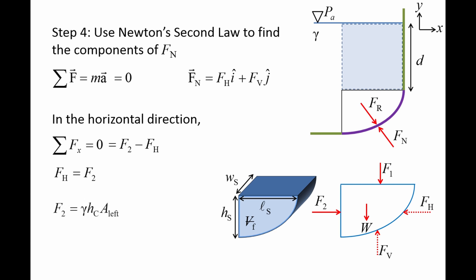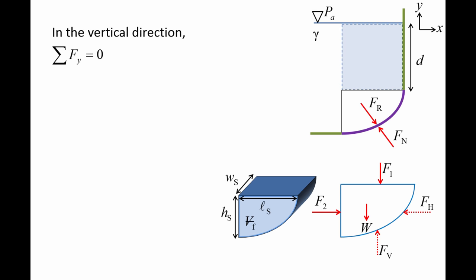F2 is the resultant force on the left planar surface and can be calculated from gamma times Hc times the area on the left side of the isolated fluid body. Hc is the vertical distance from the free surface to the centroid of the left planar surface, and is d plus one-half Hs. The area of the left planar surface is Ws times Hs. The sum of the forces in the y-direction is also equal to zero, so Fv minus F1 minus W equals zero, giving us Fv equals F1 plus W.